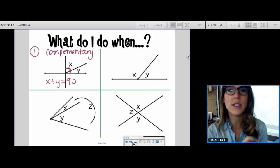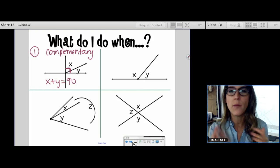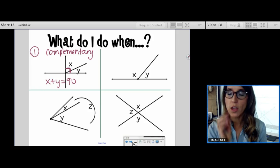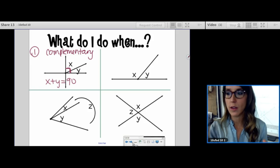So what do you do in number one? Do you set them equal? No. Are they 45-45? No. You add them to equal 90. Complementary is the reason why.